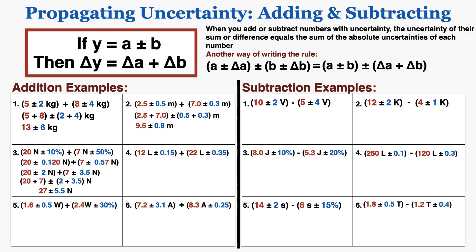In number 4, the uncertainties are fractional uncertainties — I can tell because the unit is to the right of the number, not to the right of the uncertainty. So I have to start by converting fractional uncertainties to absolute uncertainties by multiplying the fraction by the original number. Once I have the absolute uncertainties, I can just add them together and solve the problem.